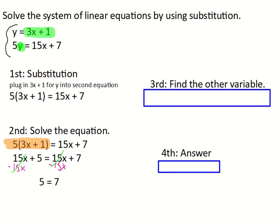So I'm left with 5 on the left and 7 on the right. So if you notice, 5 is not equal to 7. That's a false equation. So since it's a false equation, we know these are going to be parallel lines.